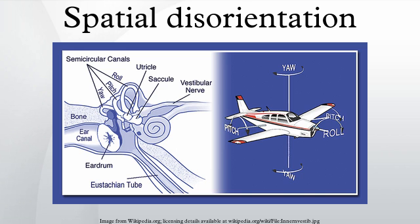Spatial orientation in flight is difficult to achieve because numerous sensory stimuli vary in magnitude, direction, and frequency. Any differences or discrepancies between visual, vestibular, and proprioceptive sensory inputs result in a sensory mismatch that can produce illusions and lead to spatial disorientation.